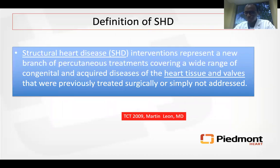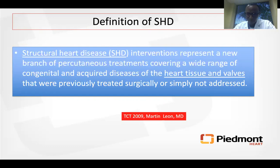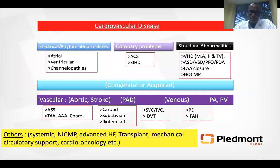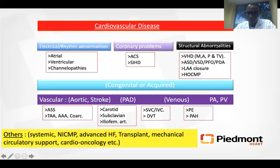Structural heart disease interventions represent a wide range of percutaneous treatments covering a wide range of congenital and acquired diseases of the heart and valves that were previously treated surgically or simply not treated. As you can see in the definition, this segment of cardiovascular medicine does not include coronary artery disease and interventions like percutaneous coronary interventions. If you step back and see the branches of cardiovascular medicine, you can divide it into electrical abnormalities, coronary abnormalities, structural abnormalities, and vascular medicine.